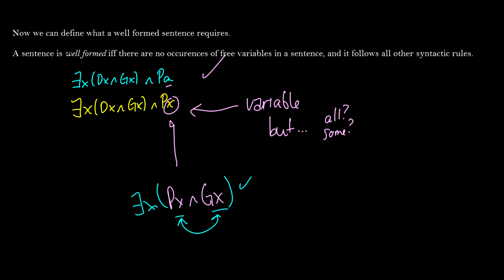This first scenario is okay, and it's also completely okay to mix predicate logic and propositional logic. We can write something like: 'there exists an x such that Dx and Px and some proposition R.' That's fine because it's just a proposition — we can have propositions in our logic.